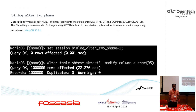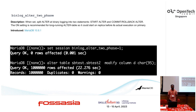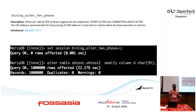For this we have a variable called binlog_alter_two_phase, which was introduced from MariaDB 10.8.1 onwards. On the master end, we just need to set this variable before running the alter. Once we set this variable and execute the alter on the master, the behavior of the alter on the master does not have any changes. Only in the binlog can we see the start alter or commit alter events.